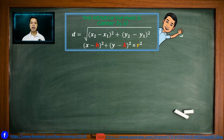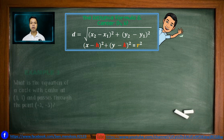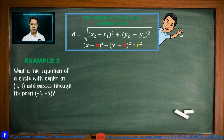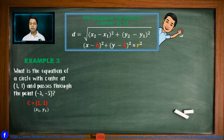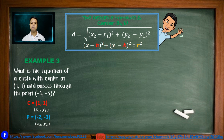Now we're going to apply both concepts in solving the next problem. Example number 3: What is the equation of a circle with center at (1, 1) and passes through the point (negative 2, negative 3)? The given center C is at (1, 1), which is our first point (x₁, y₁), and point P at (negative 2, negative 3) is our second point (x₂, y₂).